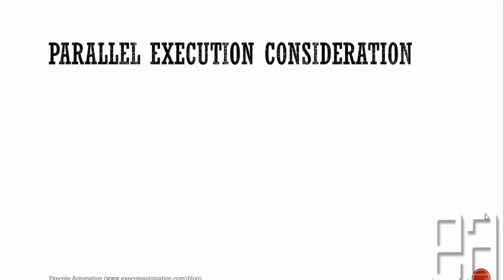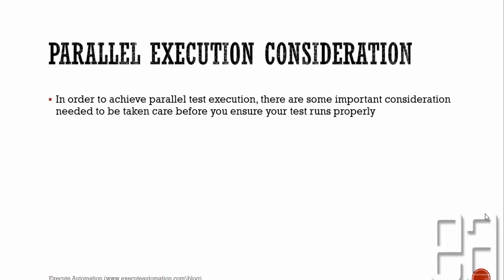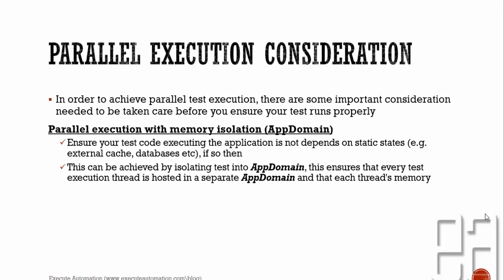It is not straightforward that you can directly execute parallel execution with SpecFlow, because your test project will not 100% support parallel execution. In order to achieve parallel test execution there are some important considerations. For parallel execution with memory isolation — otherwise called app domains — ensure your test code is not depending on any static states, such as external caches or database table changes. If so, this can be achieved by isolating the tests into app domains.